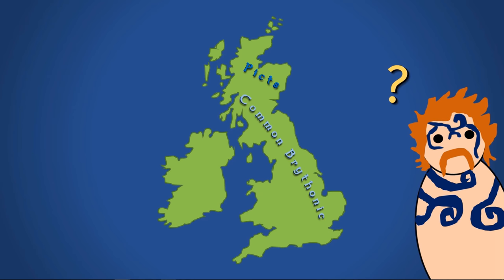The other branch of the Celtic languages in the British Isles at this time were the Q-Celtic languages, or Goidelic, which was spoken in Ireland. We're not entirely sure when this language came to Scotland — some estimates put it as early as the 2nd century AD, others even go to BC, and others have it a little bit later. But there definitely was a spread of the Goidelic language into the south-west of Scotland, with the Kingdom of Dál Riata, for example.